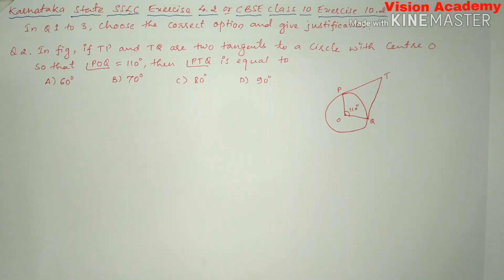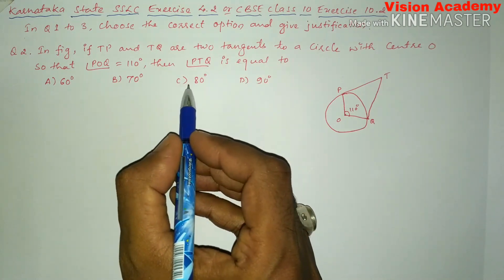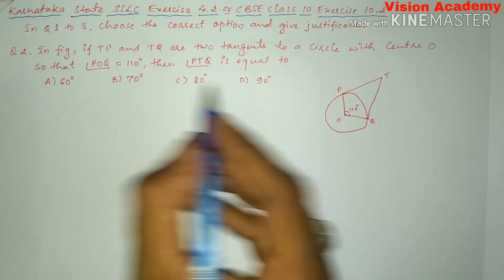so that angle POQ is equal to 110 degrees, then angle PTQ is equal to: option A, 60 degrees; option B, 70 degrees; option C, 80 degrees; and option D, 90 degrees.